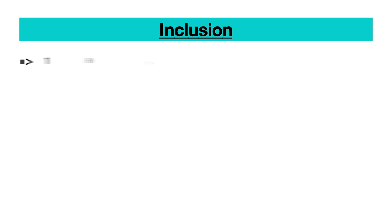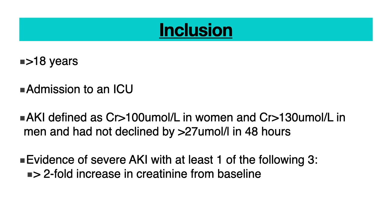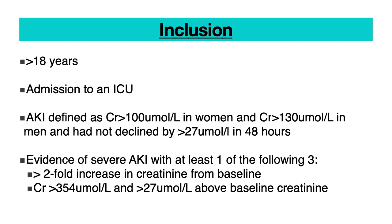The inclusion criteria were age more than 18 years and ICU admission. AKI was defined as a creatinine more than 100 in women and more than 130 in men, which had not declined by more than 27 in 48 hours. Evidence of severe AKI required any one of: a two-fold increase in creatinine from baseline, a creatinine of 354 with more than 27 increase above baseline, or a urine output of less than 6 ml per kg in 24 hours.